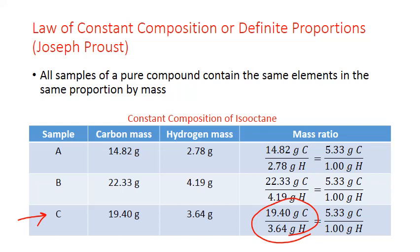So this works for every compound. It doesn't matter where it came from or how much we start with. As long as we're looking at samples of the same compound, we will always find the same ratio of elements. This is the law of constant composition.